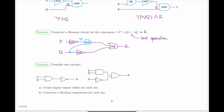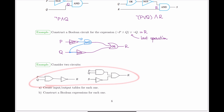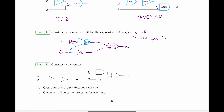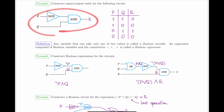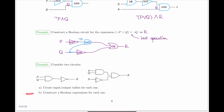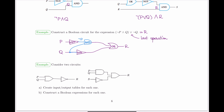This last exercise is left as extra practice. Starting with two circuits, first construct the input-output table for each by tracing each possible input value all the way through — good practice with the operations and how the gates work. Then for the second part, construct a Boolean expression for each to compare whether you get the same result that the input-output table produced. Just a bit more practice with both the logic and the design of actual combinatorial circuits.